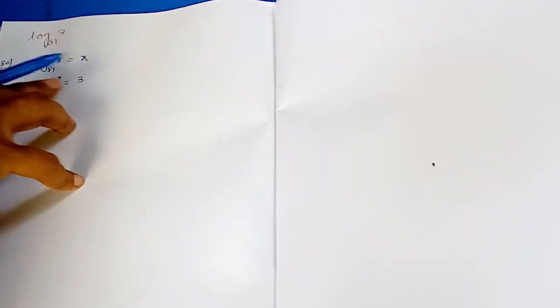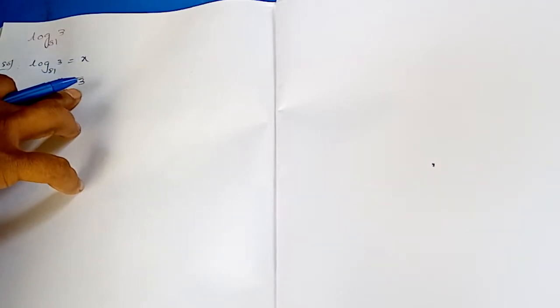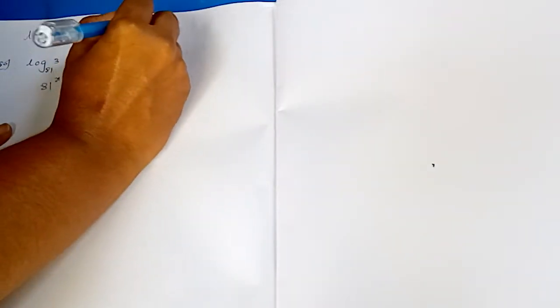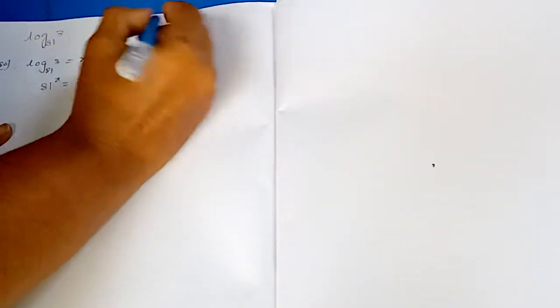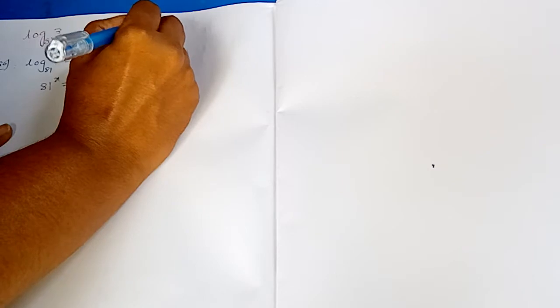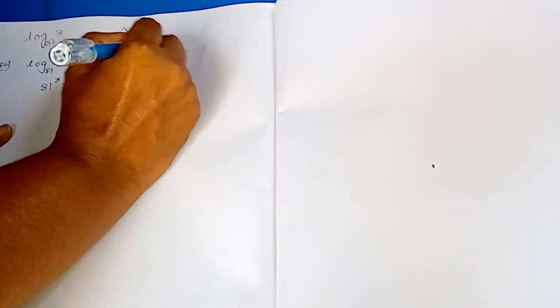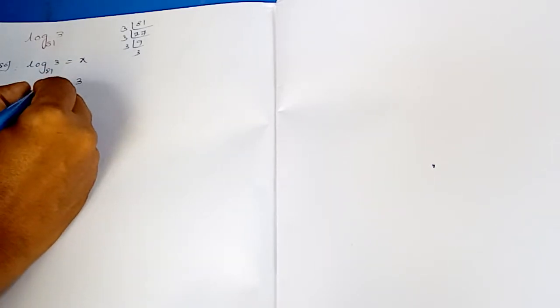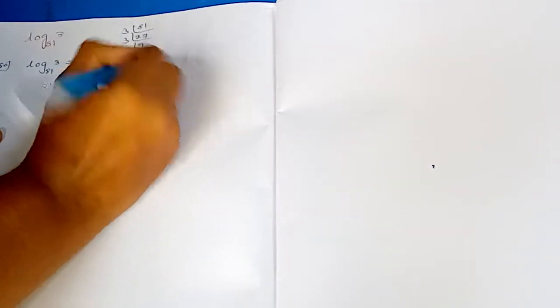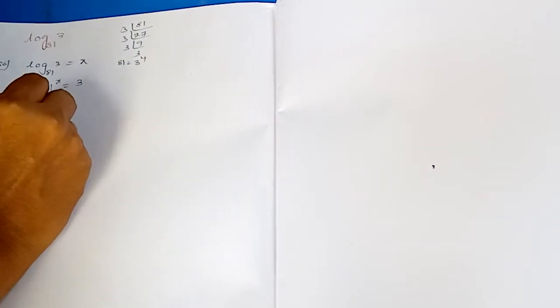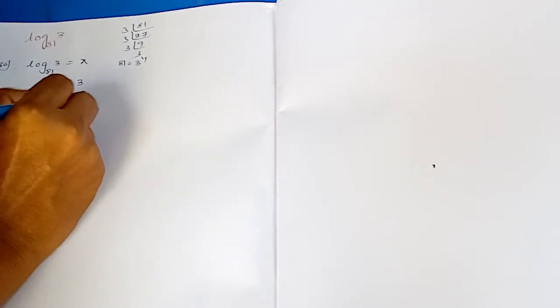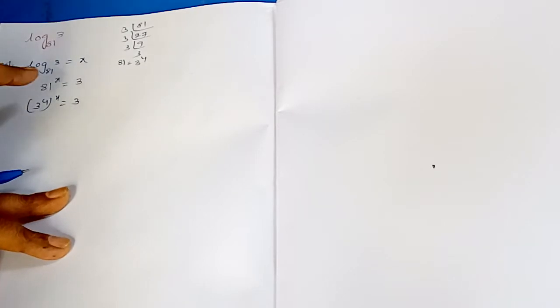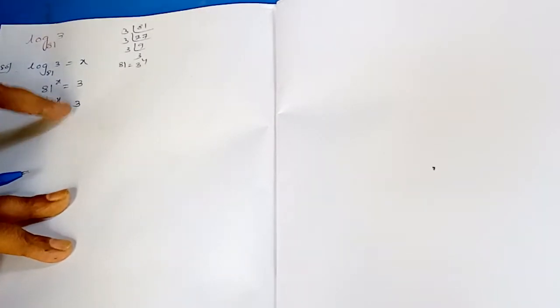The bases here are 3 and 81. Can we write 81 in terms of base 3? Yes — 81 equals 3 power 4. So we have 3 power 4, whole power x, equals to 3.